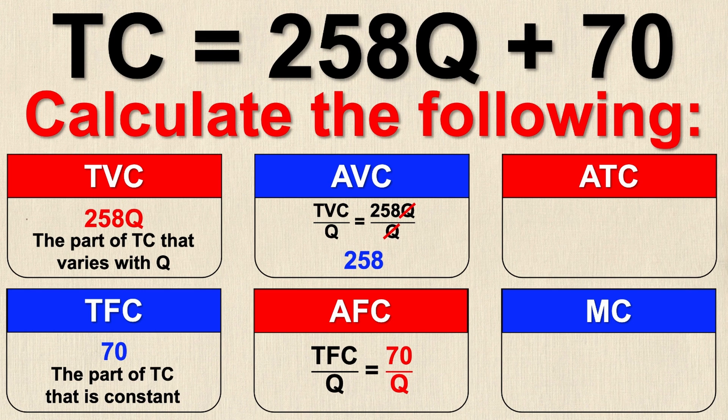Let's take a look at average total cost. Average total cost is simply the sum of average variable cost and average fixed cost. Since average variable cost is 258 and average fixed cost is 70/Q, the average total cost is 258 plus 70/Q. You might also be taught that average total cost is just the total cost equation divided by Q — that method gives you the exact same answer, so don't worry about which way you do it.